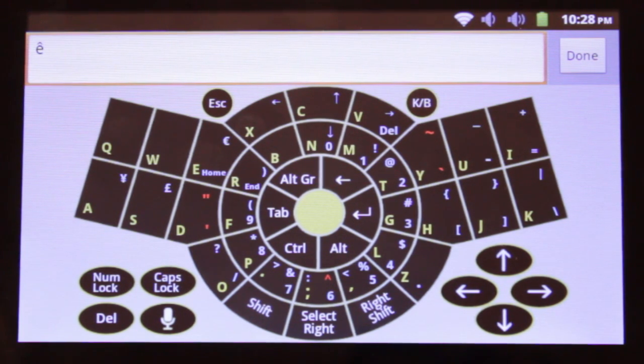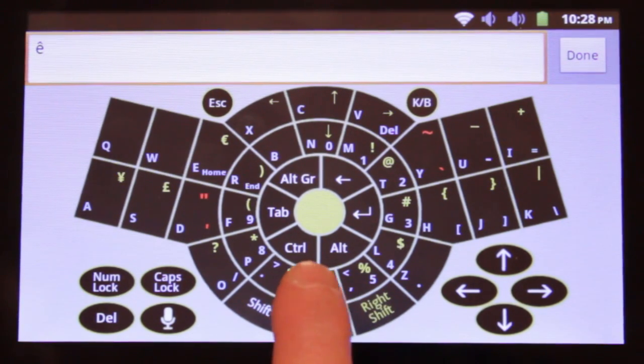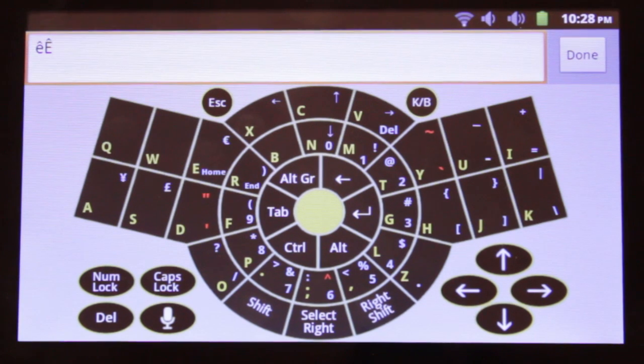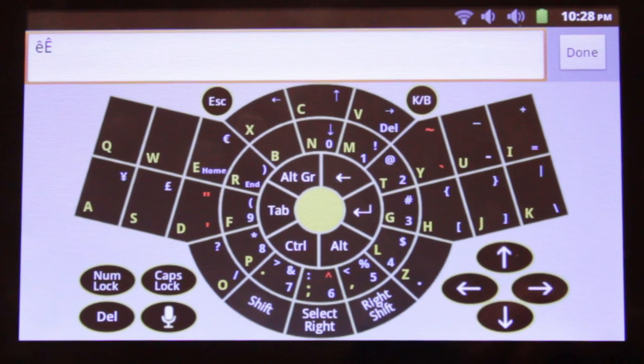To get the capital version of this character, this displays the capital version of this character, E-capital circumflex. There are five dead characters in total.